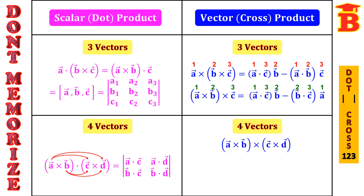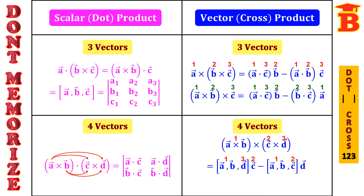We can apply the same technique even for 4 vectors. This is the cross product of 4 vectors: (A cross B) cross (C cross D). For the first formula, take the first bracket as 1 — the separate vector — 2 is C vector, 3 is D vector. Using technique 1, 3, 2 minus 1, 2, 3: 1 is (A, B), 3 is D vector, into 2 is C vector; minus 1 is (A, B), 2 is C vector, into 3 is D vector.